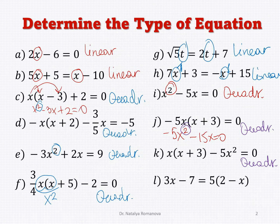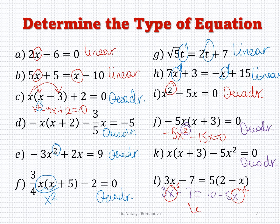Next example: 3x minus 7 equals 5 times (2 minus x). If you use the distributive property, 5 times 2 gives 10, minus 5x. You can see variable x has power equal to 1, so it is a linear equation.